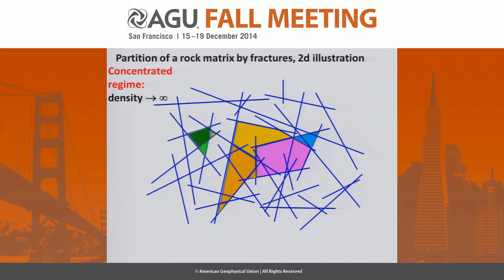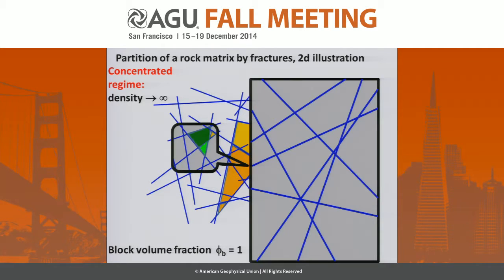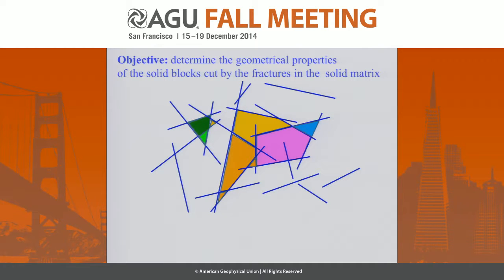If you still go ahead and increase the fracture density, you partition the whole space into small blocks. Locally, you have tessellation by infinite planes. So the objective of this talk is to determine the geometrical properties of the solid blocks when they are cut by the fractures in the solid matrix.